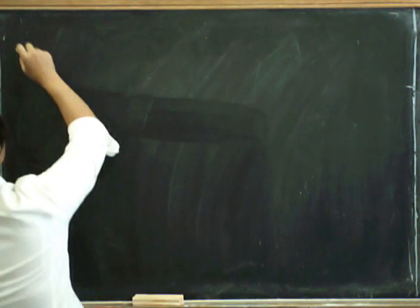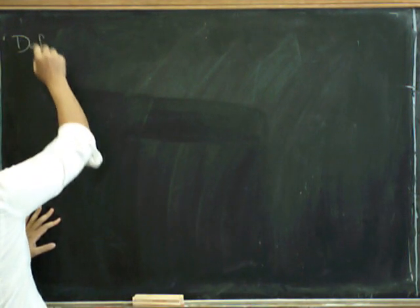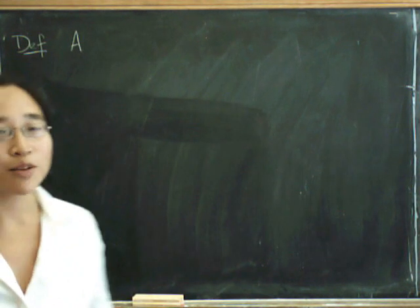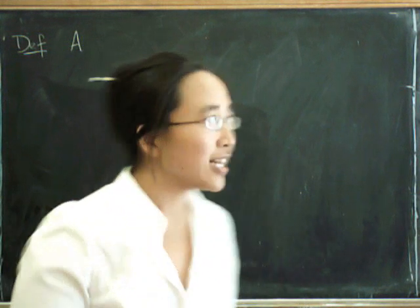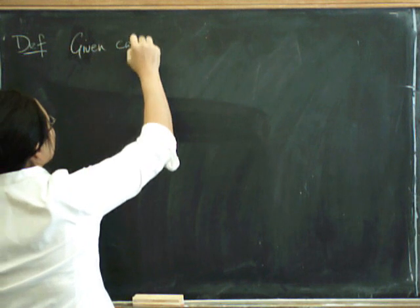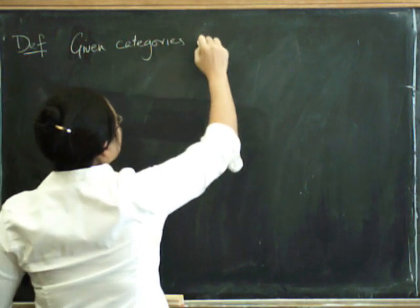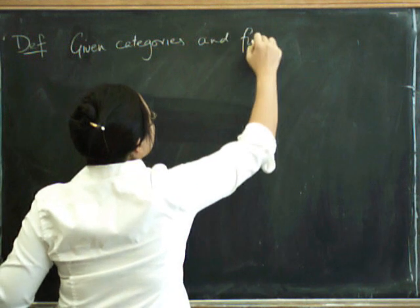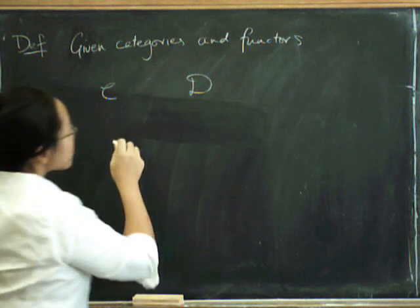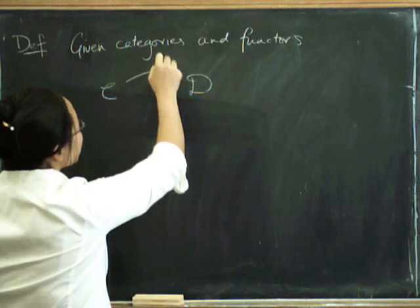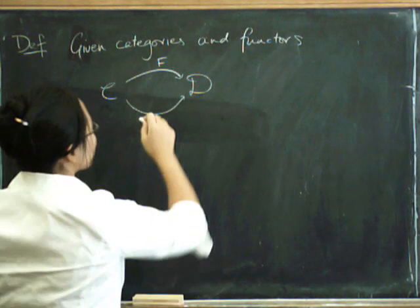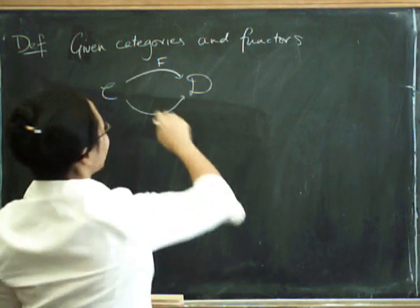So here's the definition. A natural transformation, well first of all we have to decide where a natural transformation is allowed to live. Given categories C and D and functors like this, so we've got categories C and D and we've got a functor going from C to D and another functor going from C to D. So they really have to start and finish in the same place otherwise they're not allowed to even think about having a natural transformation there.